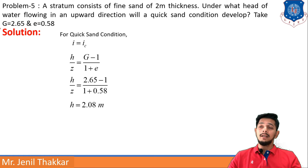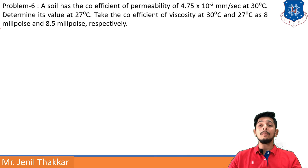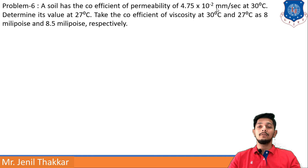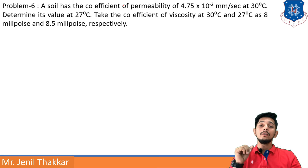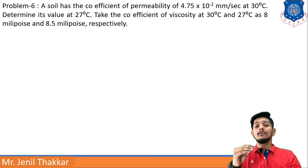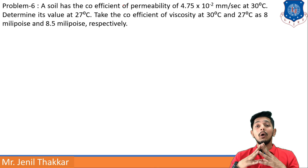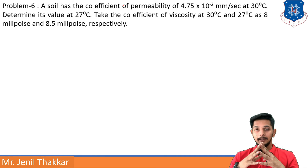Problem 6: A soil has a coefficient of permeability of 4.75×10⁻² mm/s at 30°C. Determine its value at 27°C. The coefficients of viscosity at 30°C and 27°C are 8 and 8.5 millipoise respectively.